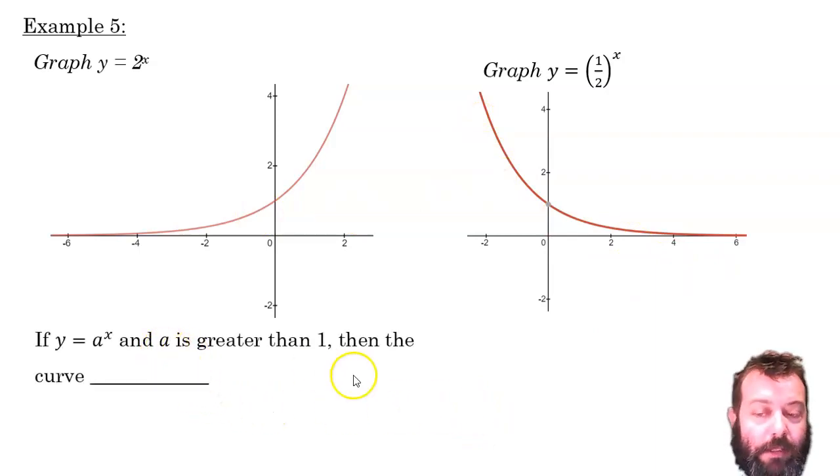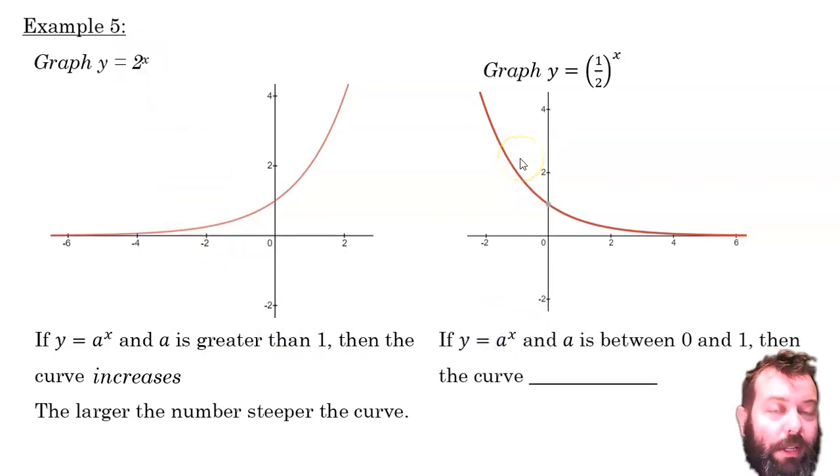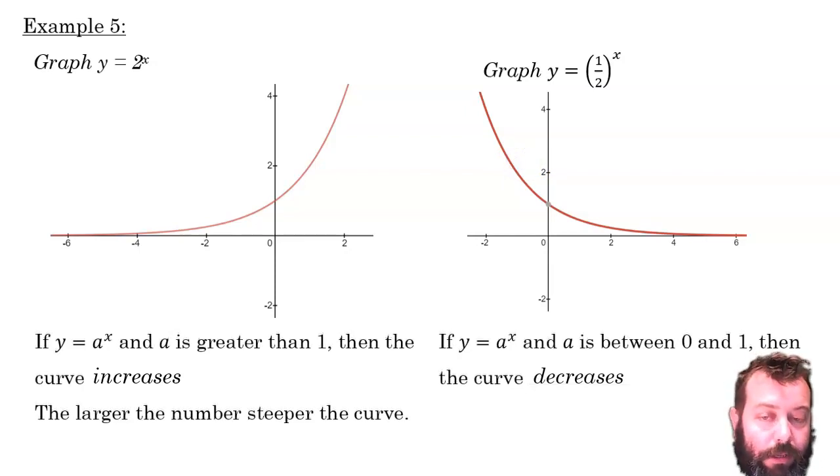So, where my base is greater than 1, the curve is always increasing. And the bigger that base, the steeper the curve. Where my base is between 0 and 1, can't be negative, but it can be between 0 and 1, a small number, then the curve will always be decreasing.